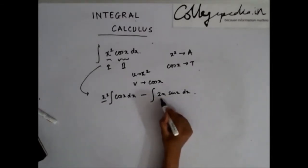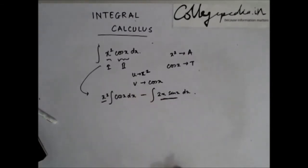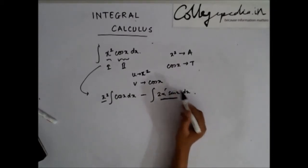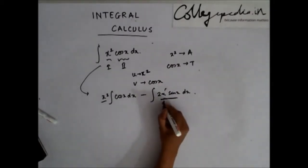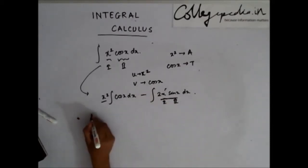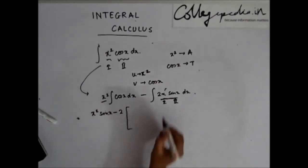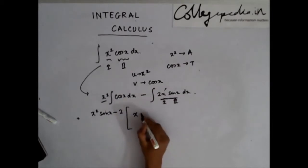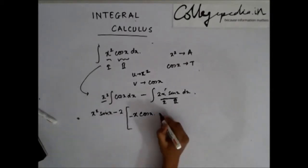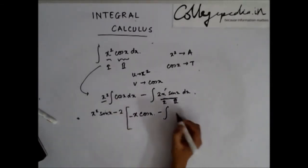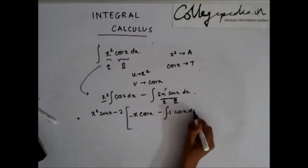We again land up with an integral that is a product of two functions: x is an algebraic function and sin(x) is a trigonometric function, so x becomes the first function and sin(x) the second. Applying integration by parts again, this gives x·sin(x) minus the integral of sin(x), which is −cos(x), and taking 2 as common, the derivative of x is 1 and integration of sin(x) is again −cos(x).